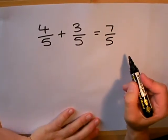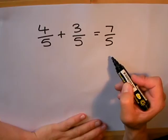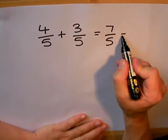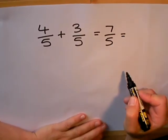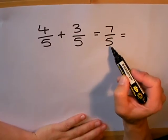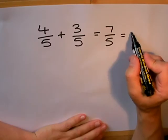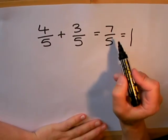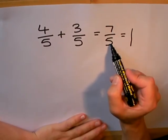So we should change this top-heavy fraction into a mixed number. Now we have seven fifths and we only need five fifths to make one whole one. So one whole one. How many have I got left over? Well, if I use up five fifths to make a whole one, I have two fifths left over.